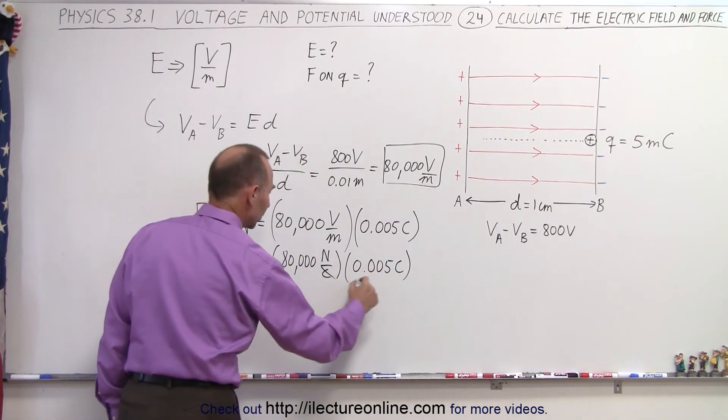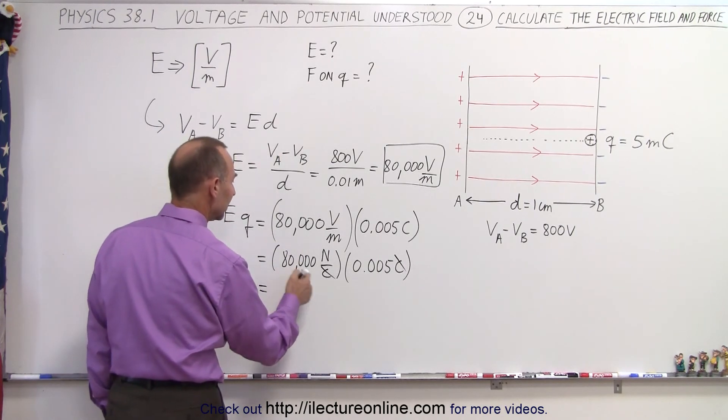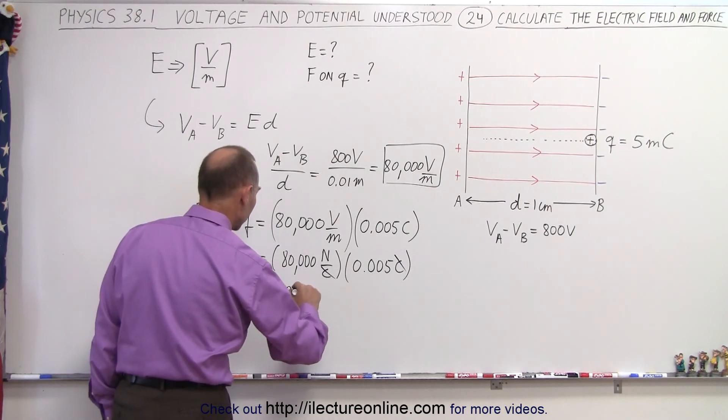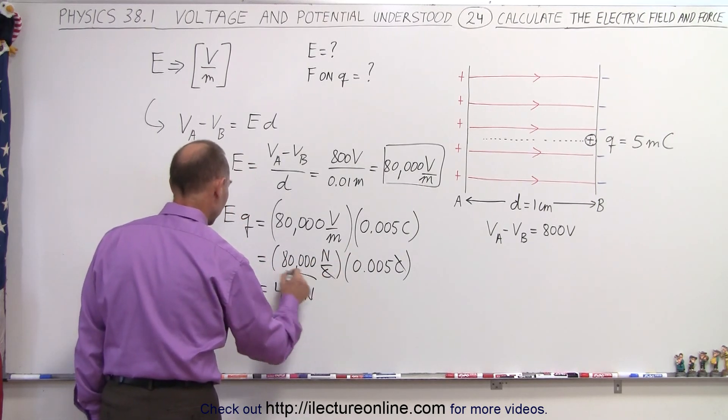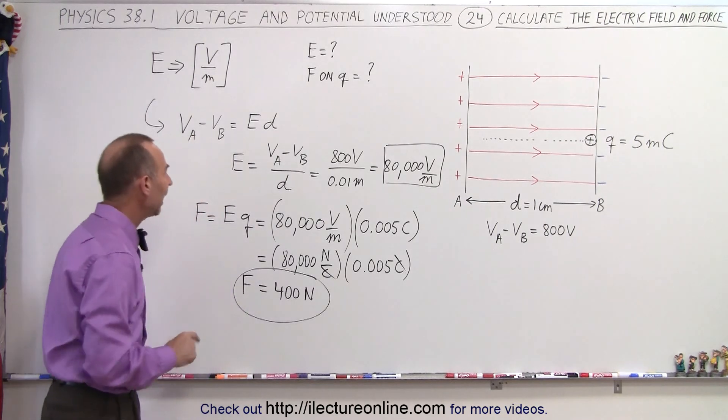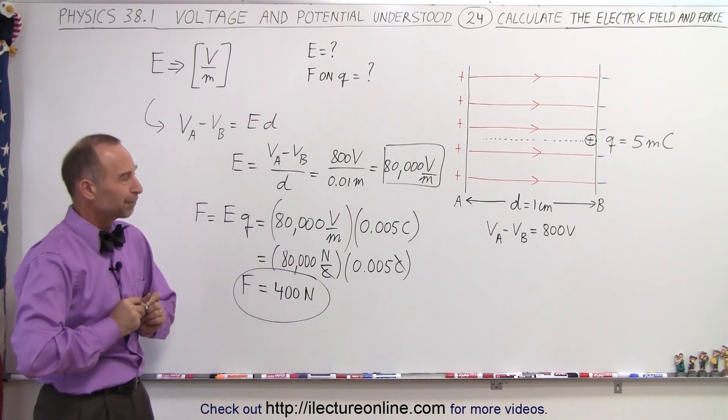So this is going to be equal to, when the coulombs disappear, we end up with newtons. Multiply, let's say that's 80, that would be 400 newtons. 5 times 80 is 400, and the zeros cancel out. So the force is equal to 400 newtons, and the electric field strength is 80,000 volts per meter. And that's how it's done.